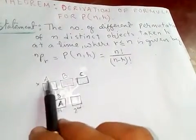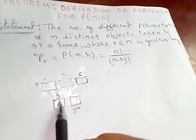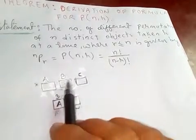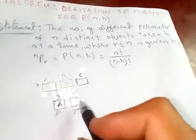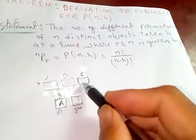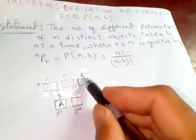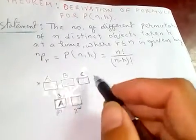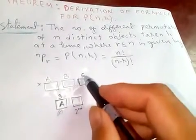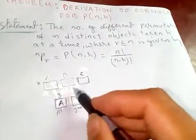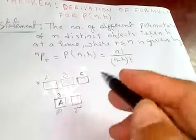Since one is already filled in the first box, out of three, one is already used. That means we have two left, so I have two options to fill the second box. In the second box, we can fill either c or b.